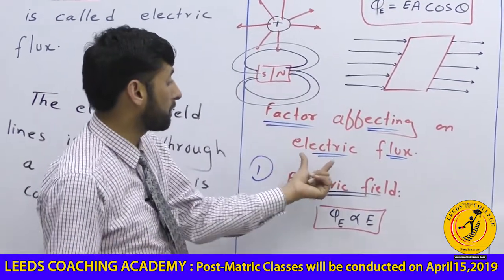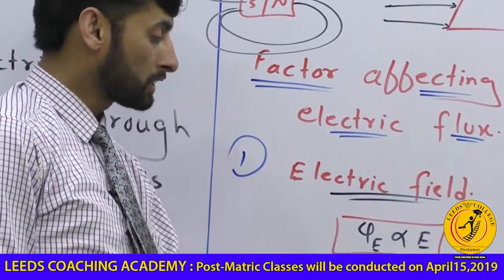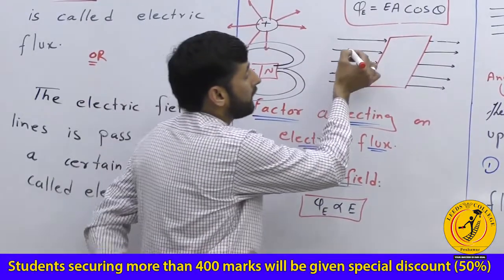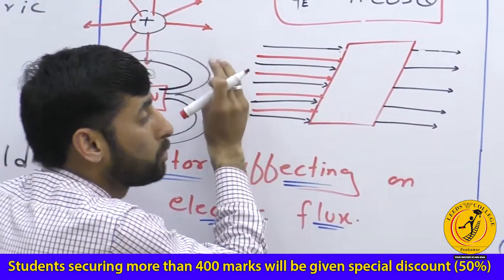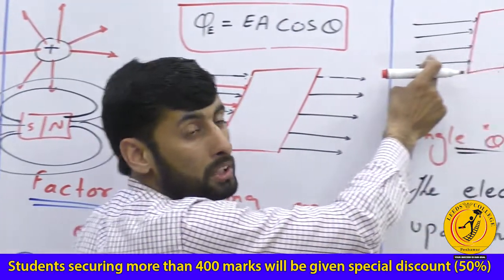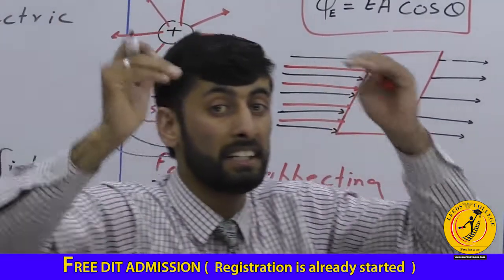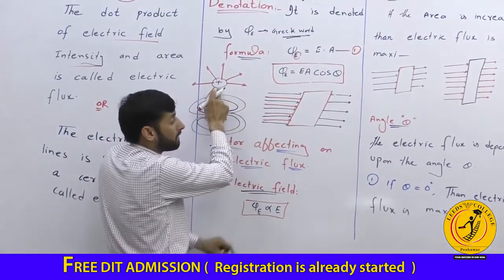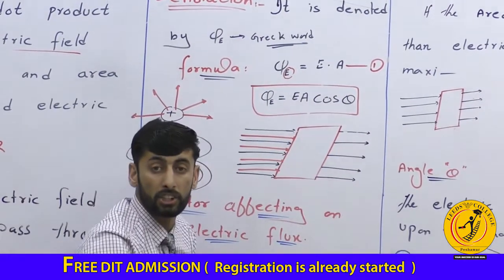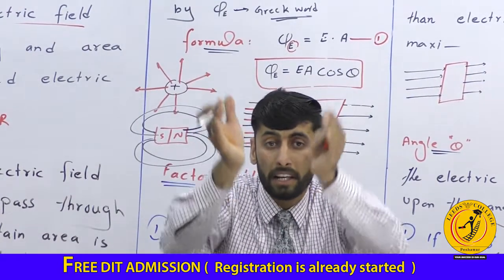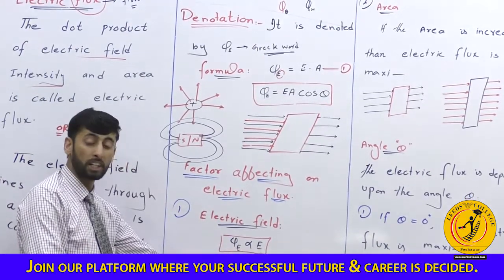Electric flux depends on the following factors. The first factor is the electric field: the greater the electric field, the greater the electric flux. If the electric field increases, more lines originate from the positive charge and pass through the area, increasing the flux. Electric flux is directly proportional to the electric field intensity.